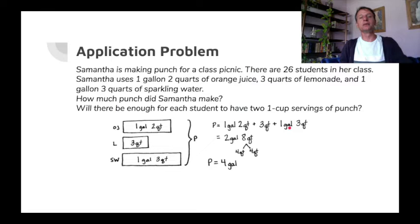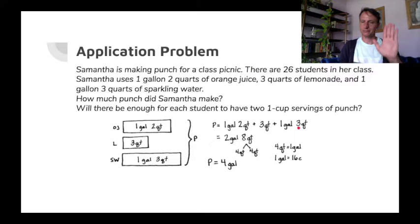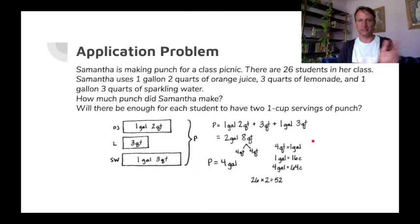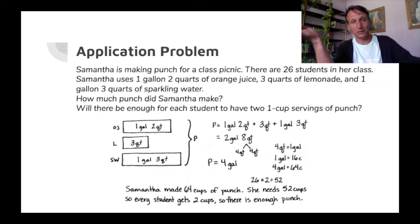Is that enough for everybody to have two one-cup servings? Remembering four quarts is a gallon, and a gallon is 16 cups — there are two pints in a quart and two cups in each pint, so four cups in a quart times four is 16. So four gallons times 16 cups is 64 cups. We already calculated they need 52 cups — 26 times two is 52. Does she have enough? Yes! She made 64 cups and needs 52, so if every student gets two cups there is enough punch. And it's always good to have a little extra because somebody is going to spill.